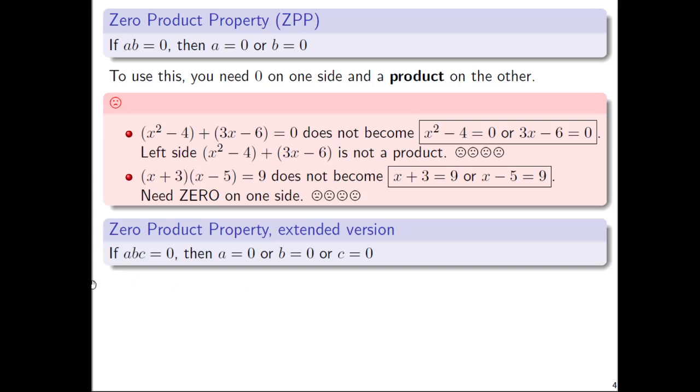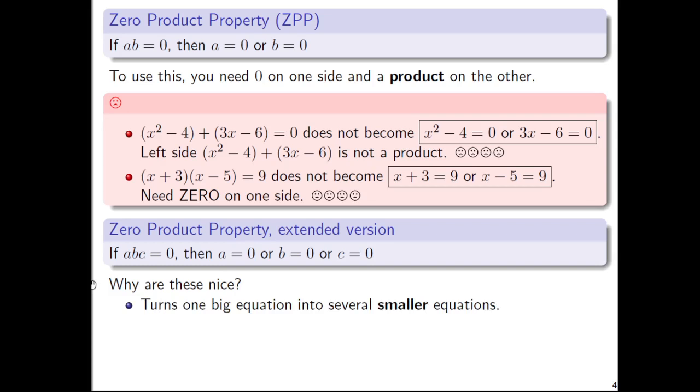We saw an extended version. Something like if a × b × c = 0, then a = 0 or b = 0 or c = 0. So why are these, the zero product property or any kind of extended version of it, why are these nice? It turns one big equation into several smaller equations.